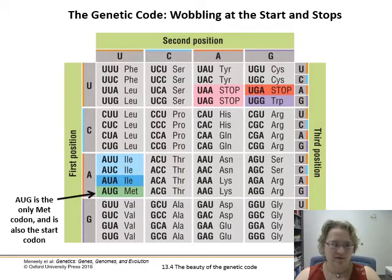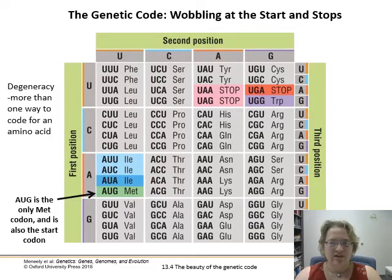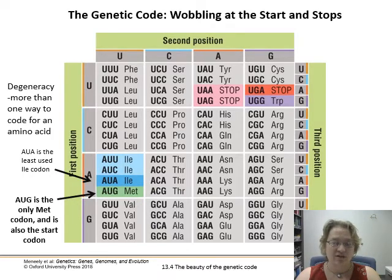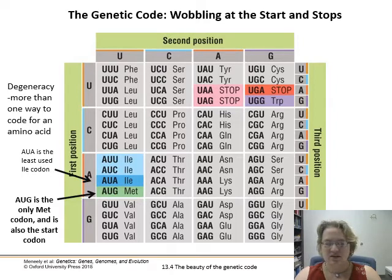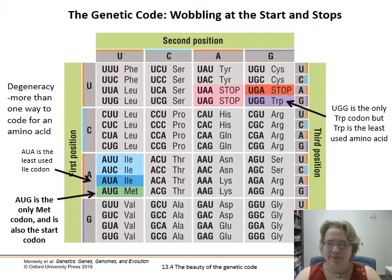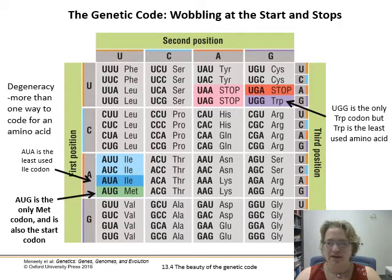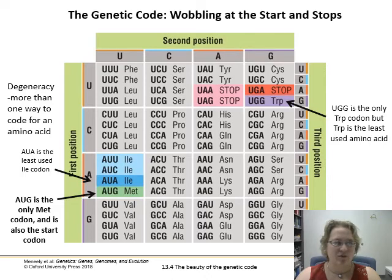There's an interesting pattern with amino acids here, except for a couple. AUG is the only methionine codon, and it also happens to be the start codon. There's also this interesting degeneracy — more than one way to code for an amino acid. For isoleucine there are three options, but the one that switches from the start codon with a wobble between purines at the end is the least used isoleucine codon. Similarly, near the UGA stop codon, tryptophan is UGG — the only tryptophan codon — and tryptophan is the least used amino acid. There may have been an evolutionary push to avoid codons that could easily mutate into stop or start codons.